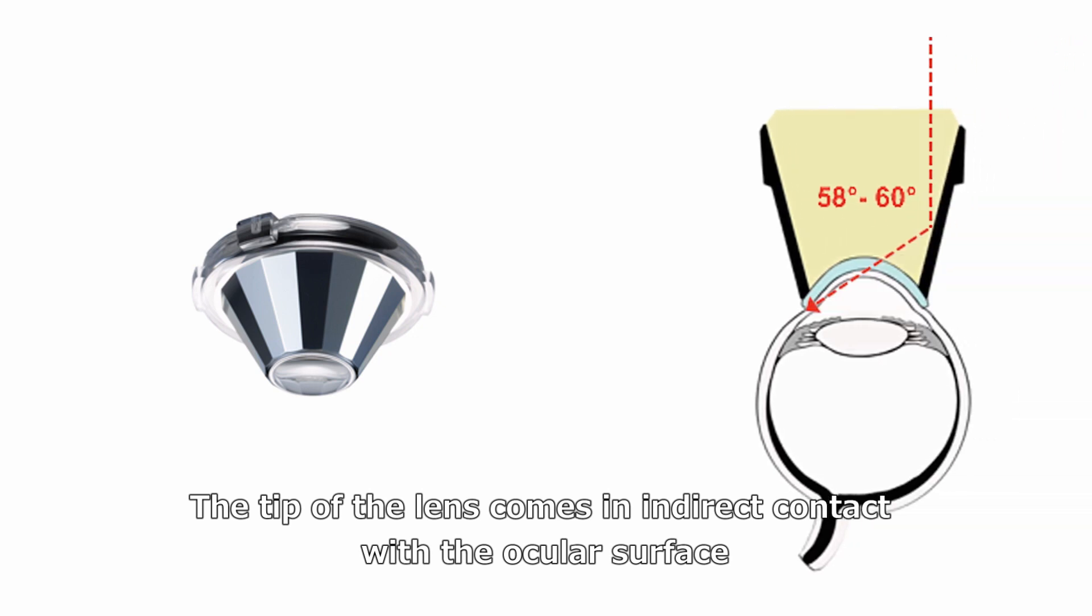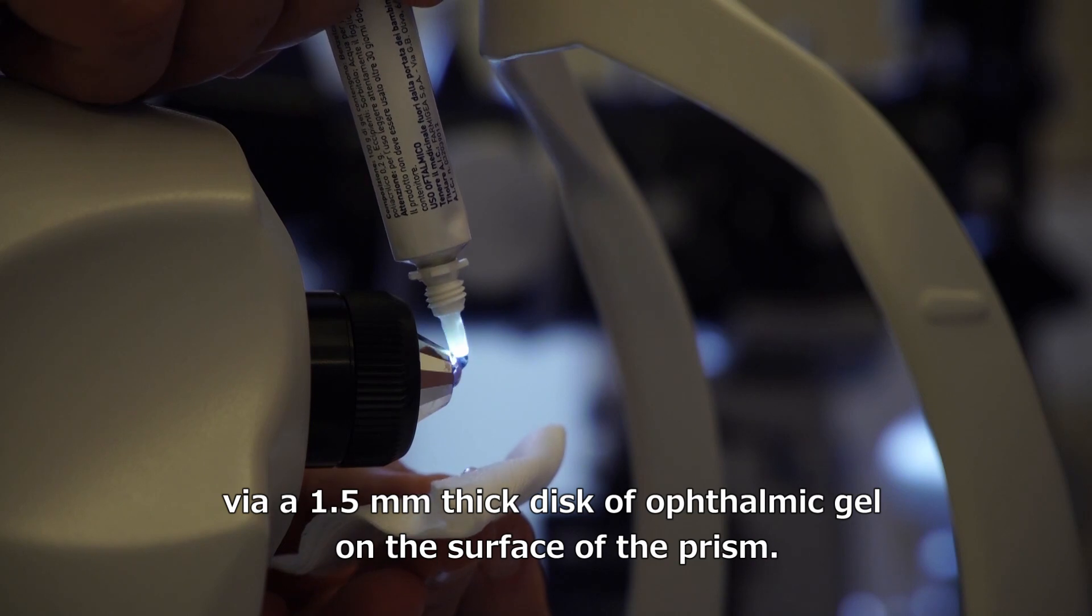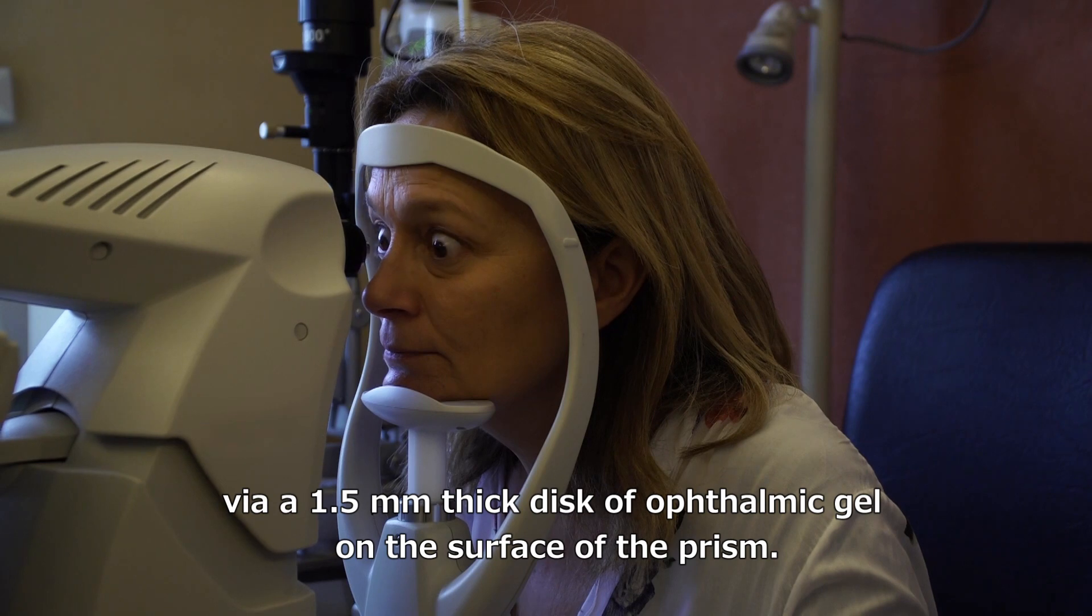The tip of the lens comes in indirect contact with the ocular surface via a 1.5 mm thick disc of ophthalmic gel on the surface of the prism.